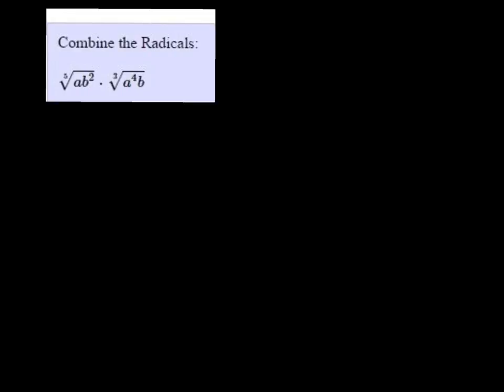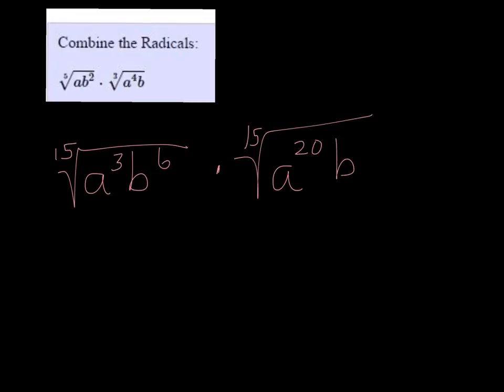So I'm going to multiply the first one, everybody, by 3. So I get the 15th root of a cubed b to the 6 times the 15th root. Now the second one, I have to multiply everybody by 5, 15th root of a to the 20th, b to the 5th power.